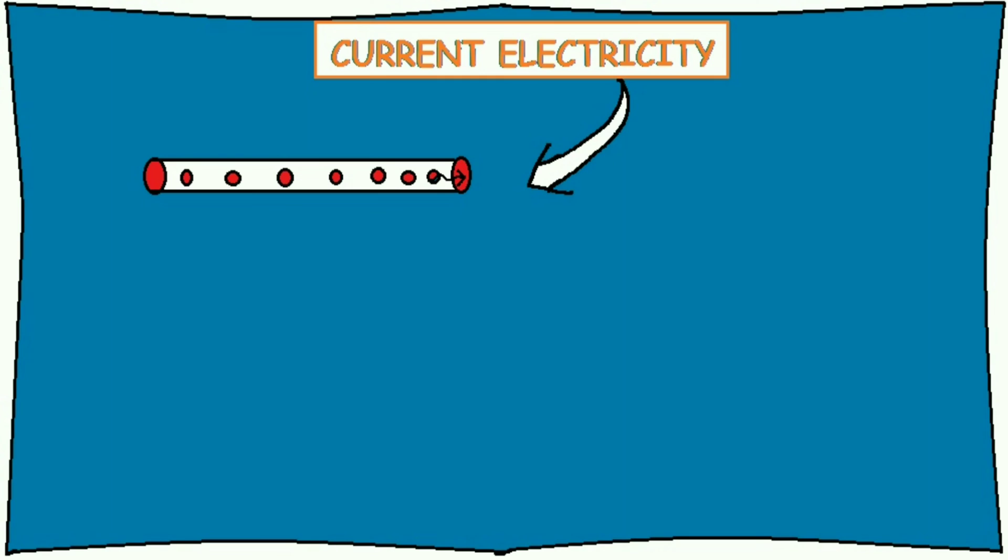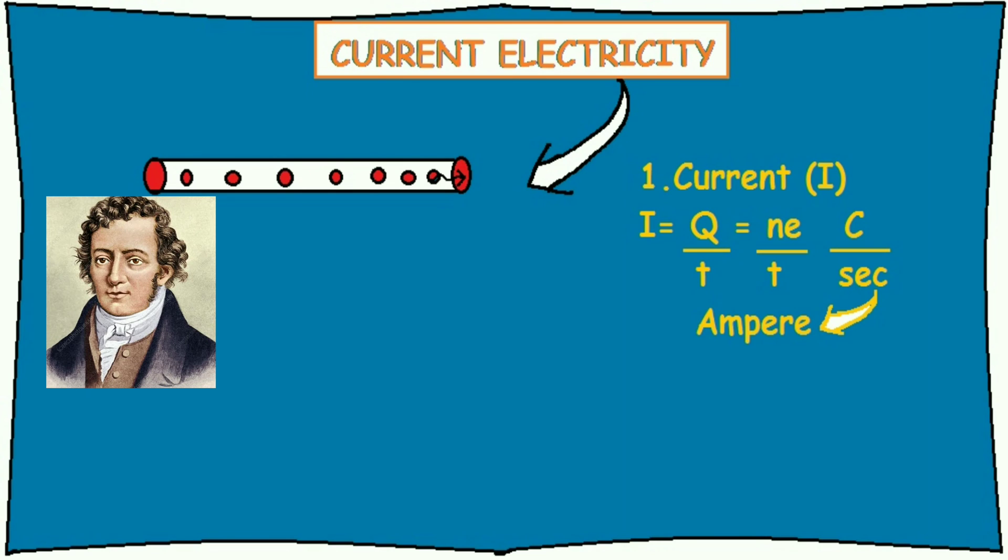Current is the rate of flow of electric charge. It is like a water current. When the water particles move, they give rise to water current. Similarly, when electrons move, they give rise to electric current. The SI unit of current is ampere in honor of a scientist, Ampere. One ampere is equal to one coulomb of charge flowing per second.